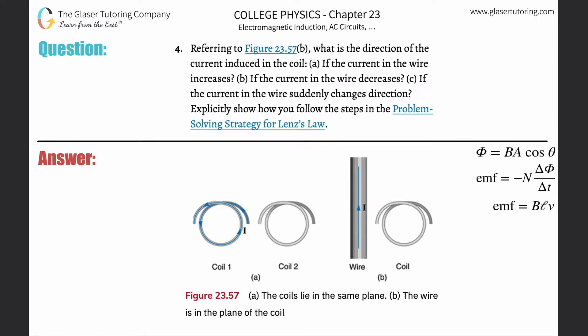Number four, referring to figure 23.57 letter B, what is the direction of the current induced in the coil if letter A, the current in the wire increases?